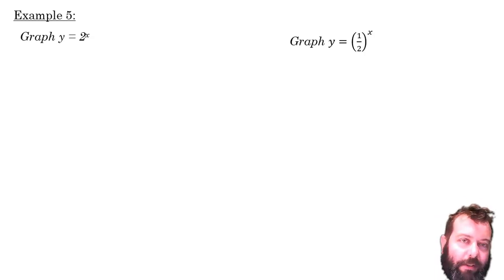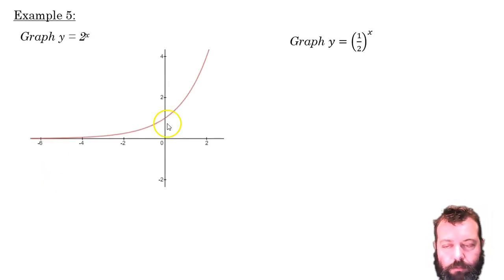Now y equals 2 to the power of x is a very common form of this equation and its graph looks something like this. You'll notice that, first of all, it's increasing from left to right. It's always going up and it's going up at an increasing rate all the time. It's always getting steeper.